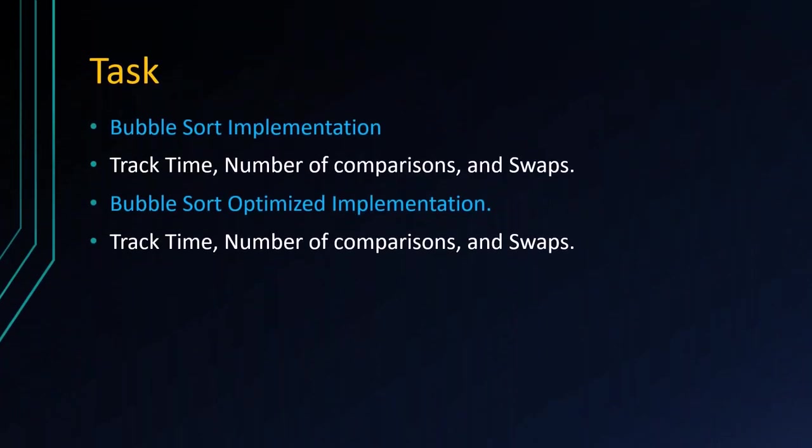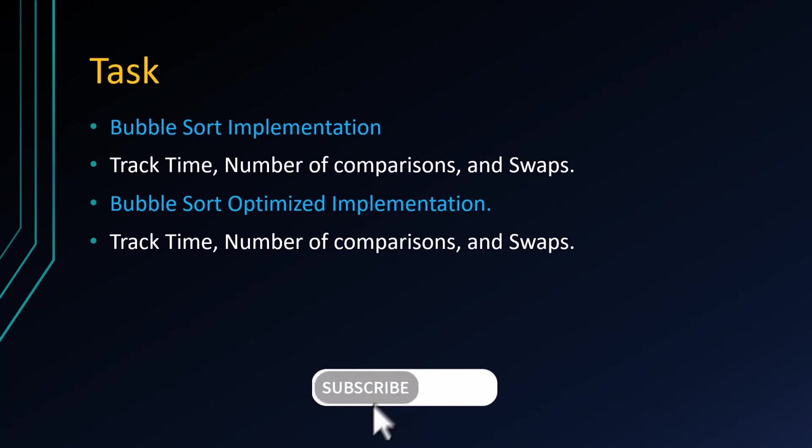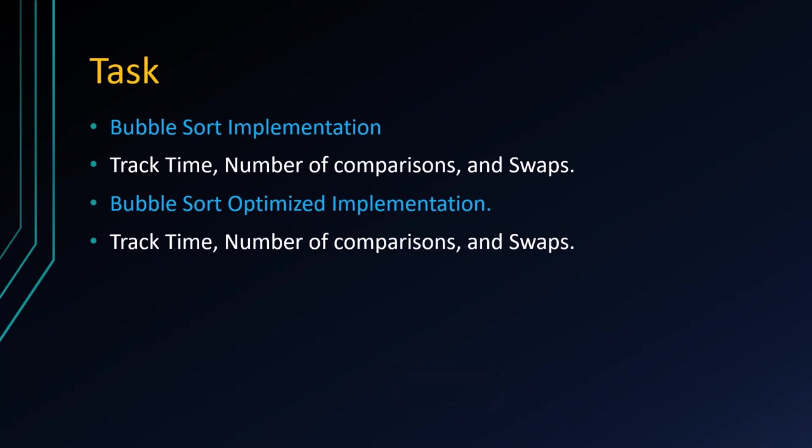Task. In this implementation, we will implement two versions of bubble sort: the simple bubble sort algorithm, and we will track time, the number of comparisons, and the number of swaps taken during the sorting of the array. In the second implementation, I will use the optimized version, and both algorithms will have different numbers of comparisons and swaps because of the runtime.